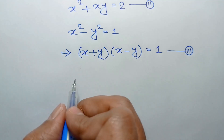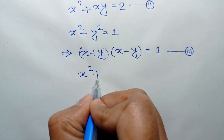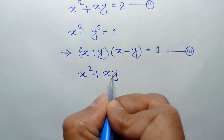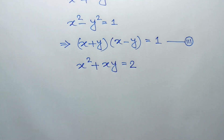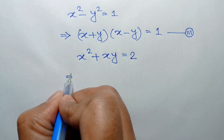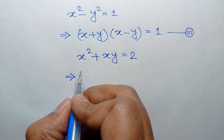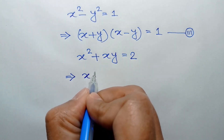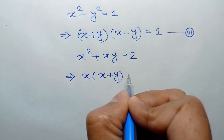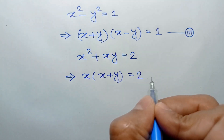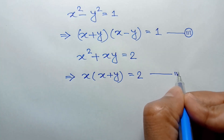From equation 2, we can write x squared plus x y is equal to 2. Taking x common from the left side, we will have x times x plus y is equal to 2. Call it equation number 4.